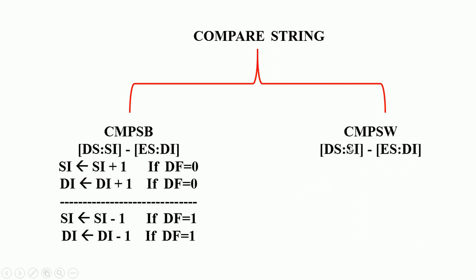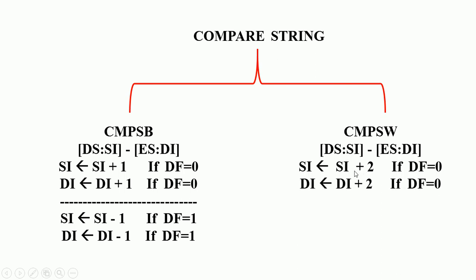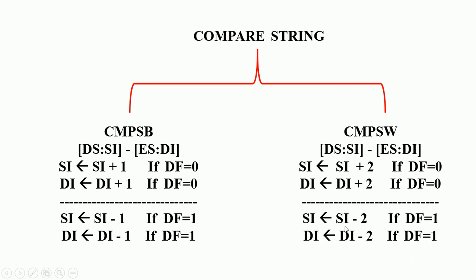In the same way, compare string word compares 16 bits at a time. It gets a 16-bit number from string 1 and another 16-bit number from string 2, takes the difference, and all flags are affected but memory content remains unchanged. After comparison, the content of SI and DI is incremented by 2 if direction flag is reset, or decremented by 2 if direction flag is set. This makes it a more efficient instruction for comparing two strings.